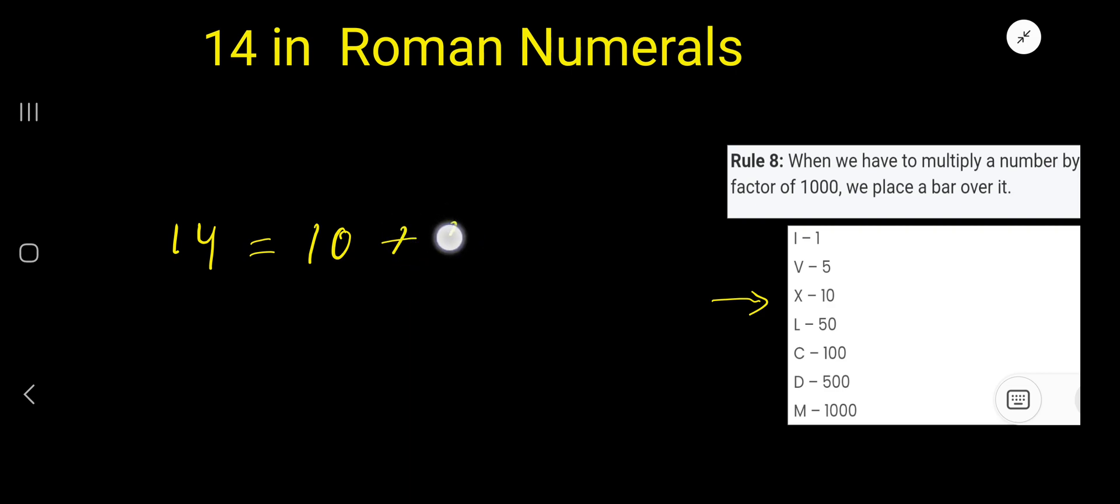So 10 plus 4 we can use, but there is no equivalent for 4. And if you write 4 ones for 4, that will be wrong because we cannot use the same Roman letters more than three times. But for 4, we'd have to write 4 times I, so that is not correct. So we'll change our plan.